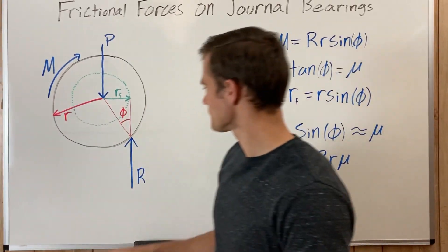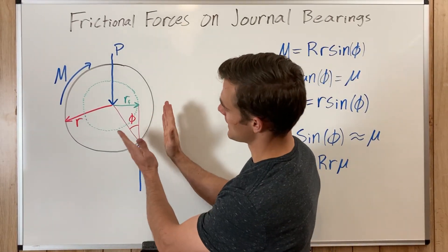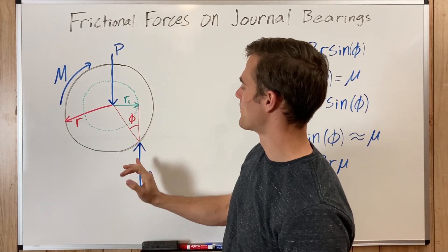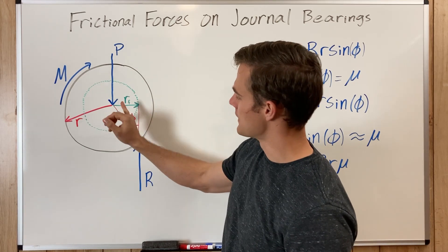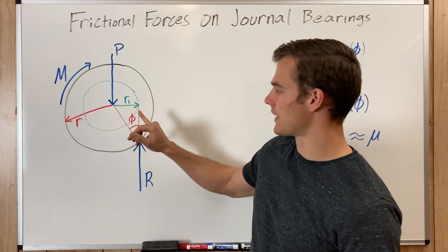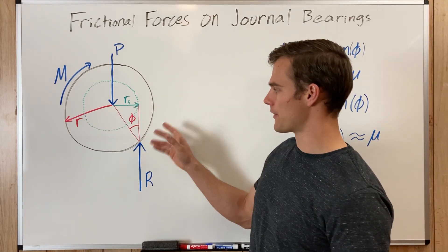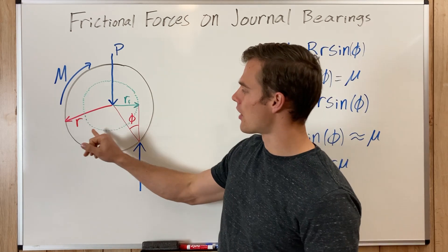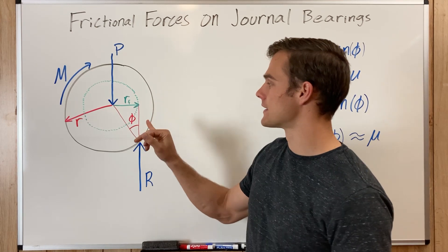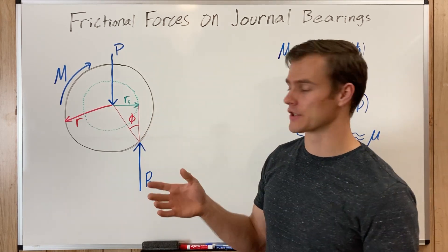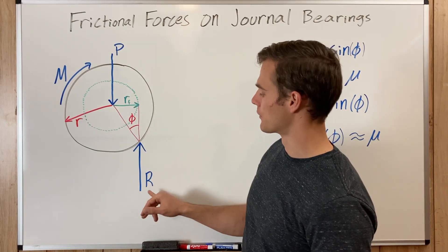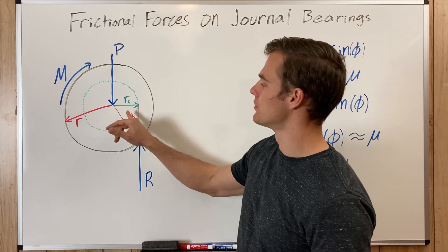So then we have this angle here that it makes from being perpendicular or straight up and down. The angle it makes between that and the center is called the angle of kinetic friction, and we notate that with phi. And then R is the radius of the axle and R sub F is the radius of the circle of friction, and the reaction force is tangent to the radius of the circle of friction.